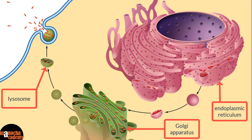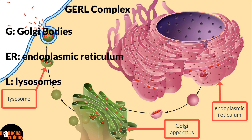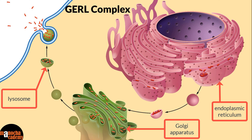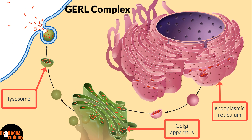The endoplasmic reticulum, Golgi bodies, and lysosomes together form a system known as the GERL complex — G for Golgi bodies, ER for endoplasmic reticulum, and L for lysosomes. They work in coordination: the ER forms primary protein, carbohydrate, and lipid structures, which are sent to the Golgi bodies for modification into their final active form. Some of these proteins — the enzymes — are then packed inside membranes to form lysosomes. These three structures are closely placed to communicate with each other.